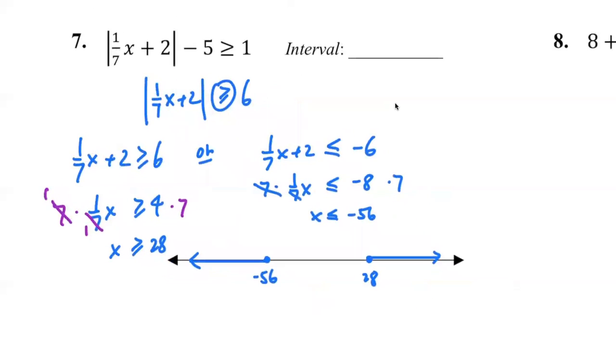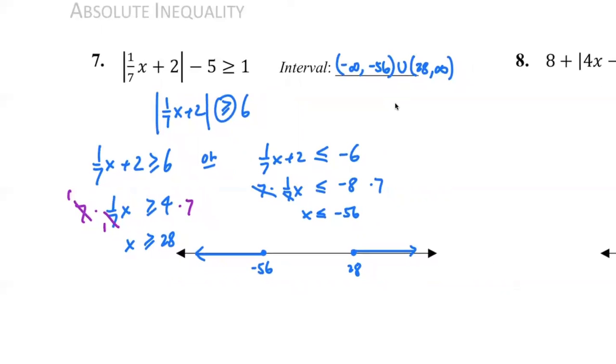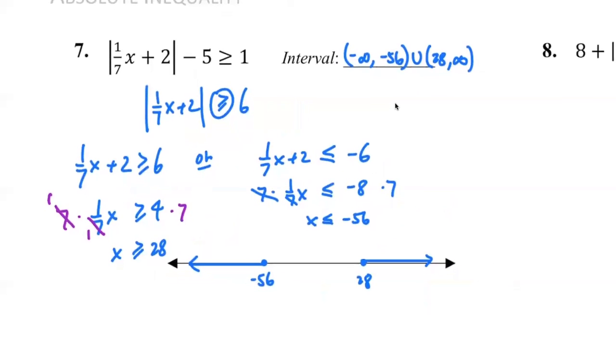So for our interval notation, we will have negative infinity to negative 56, union, and then 28 to infinity like this. Okay, oh, can you see my mistake over here? Let me give you three seconds to find out my mistake.